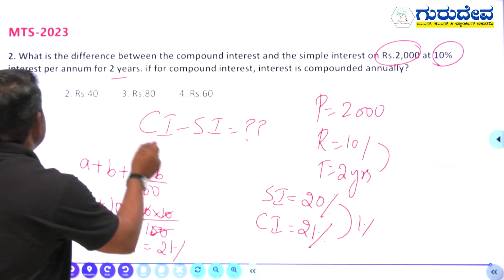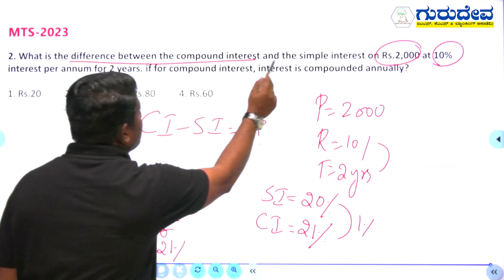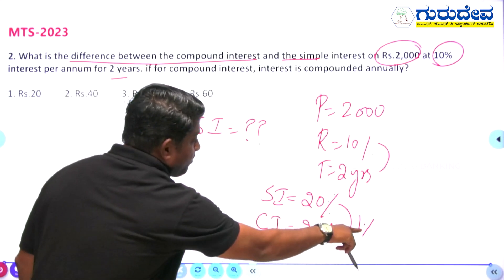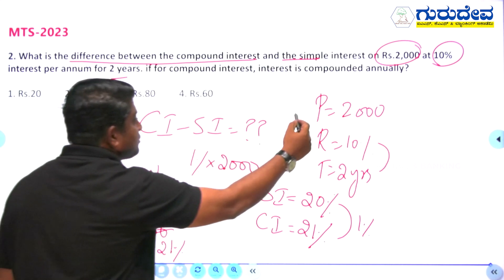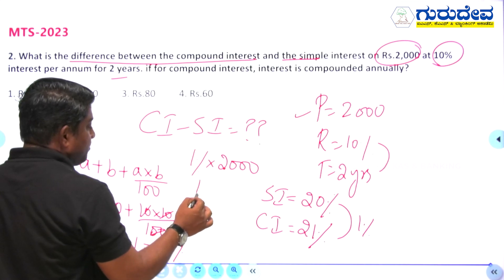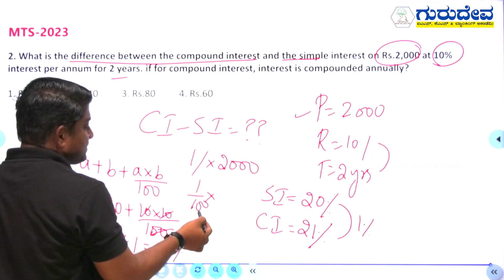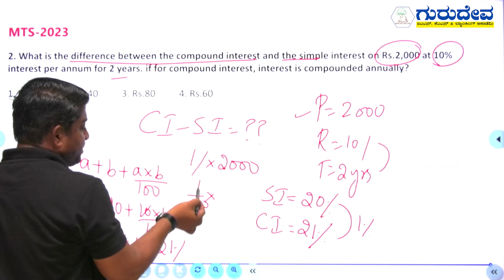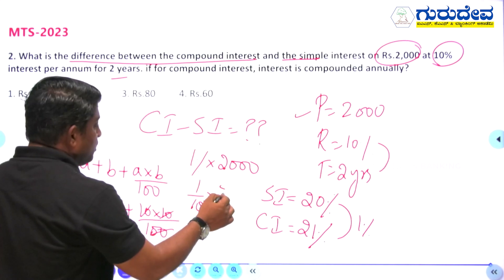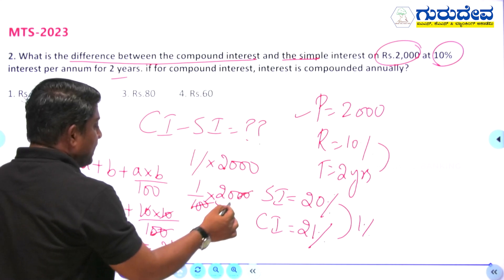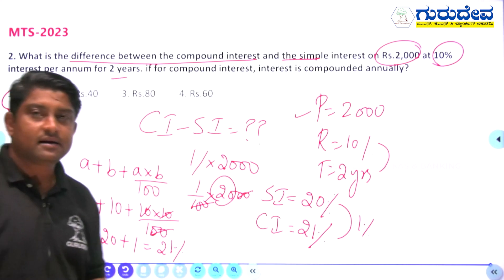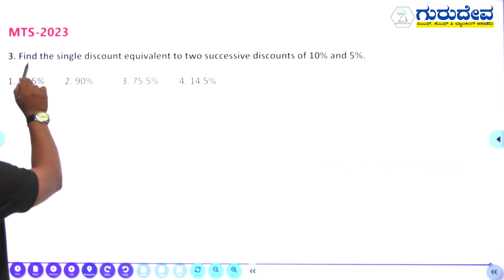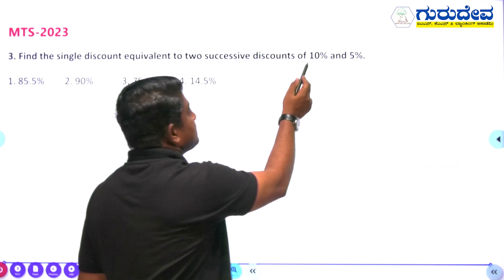The difference is 1 percent. Now, 1 percent of the principal ₹2000 = (1/100) × 2000 = ₹20. So the difference between compound interest and simple interest is ₹20. Option number 1 is the right answer.